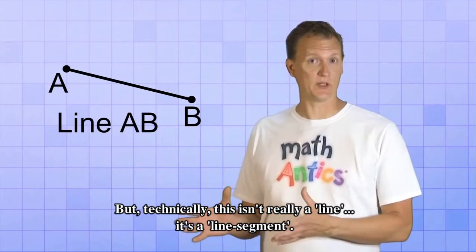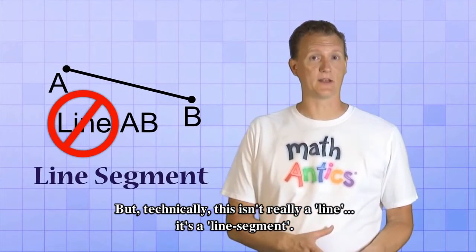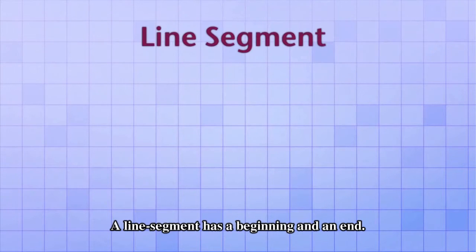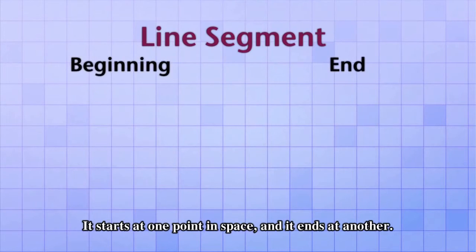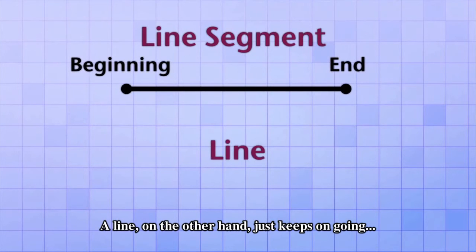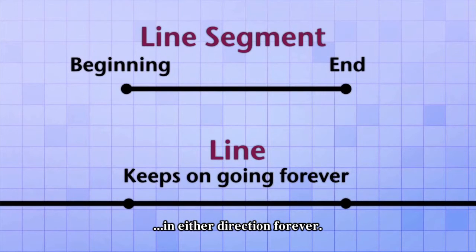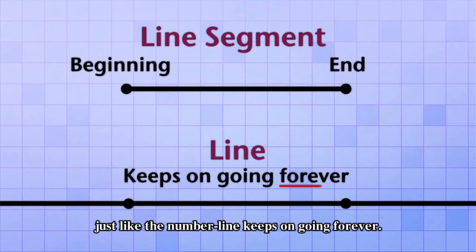But technically, this isn't really a line. It's a line segment. What's the difference, you ask? That's a good question. A line segment has a beginning and an end. It starts at one point in space and it ends at another. A line, on the other hand, just keeps on going in either direction forever, just like the number line keeps on going forever.